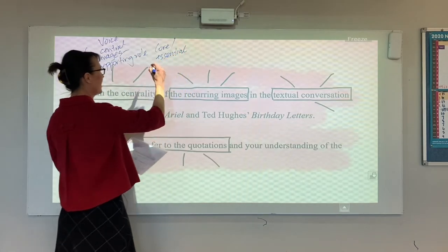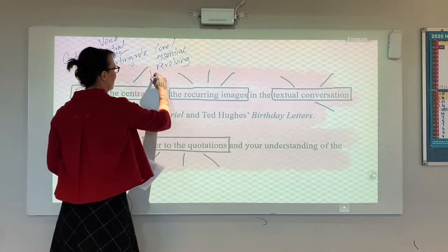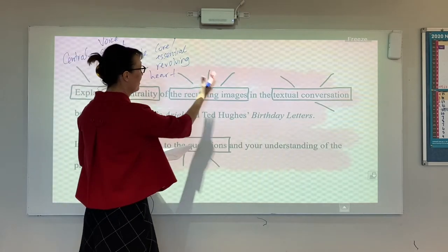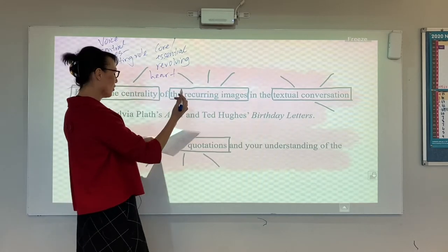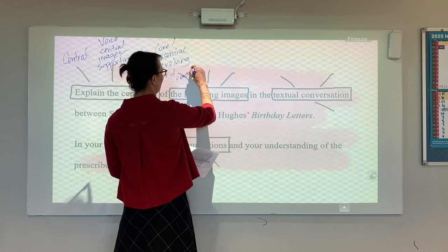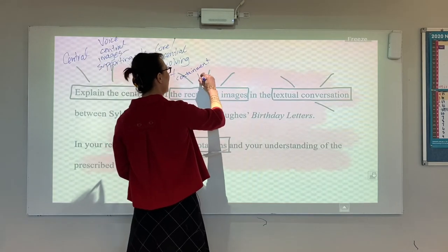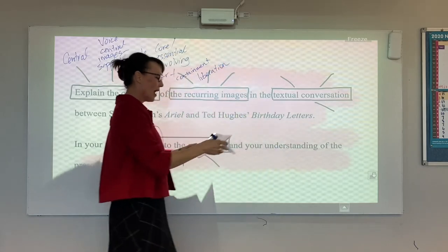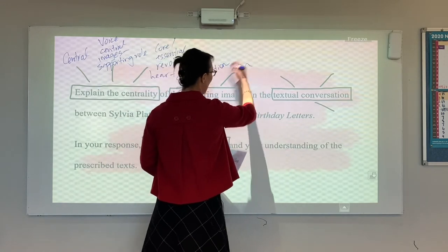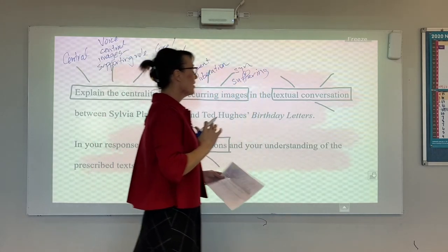Some other words might be: it's the core, it's the essential aspect of the conversations, it's the revolving point, it's at the heart and center. The recurring images — these are the things you've probably already been focusing on, and that shouldn't have been too difficult. We could see that a lot of people tapped into that. We saw images of containment or entrapment, and then this idea of liberation or transformation. That allows you to have synonyms, or perhaps you've got another thesis point — some of you had images of suffering, which all worked.